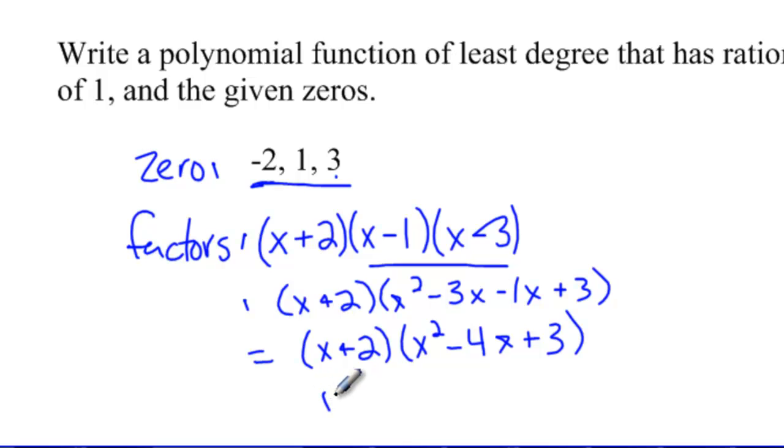So I'll say x to the third minus four x squared plus three x, I just distributed the x to all three terms here, and then I'm going to do plus two x squared minus eight x plus six.